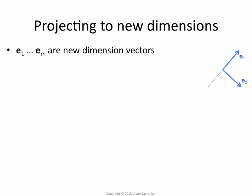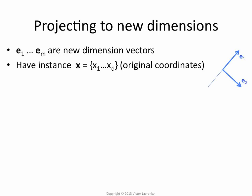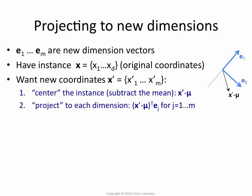So what does it mean to project? You have an instance x, which is a d-dimensional vector — d is our original high dimensionality — so you have attributes x1 through xd. What we're going to do is find the new components x1 through xm, which are the coordinates in the new space. We take our instance x, subtract the mean from it to center it, and then for each eigenvector we compute a dot product between this centered data point and each of the m eigenvectors.